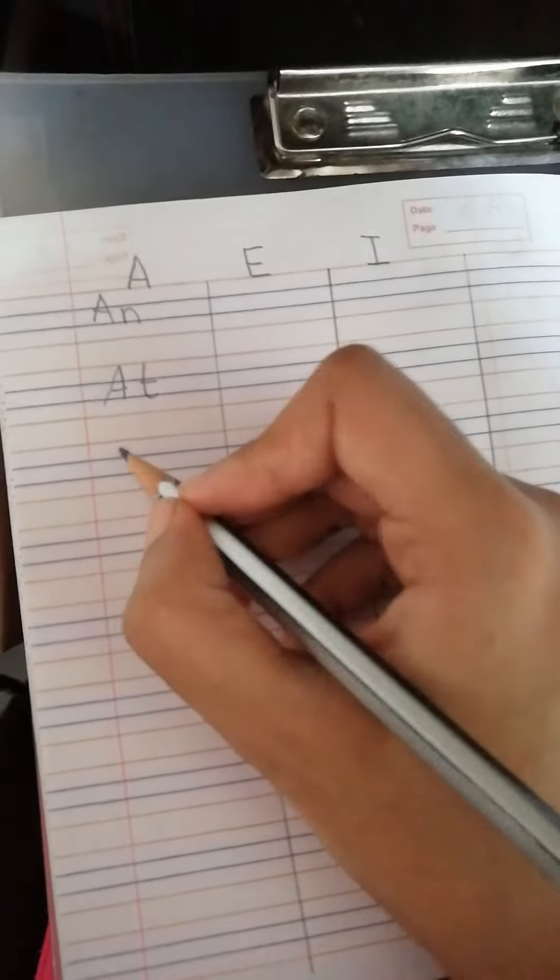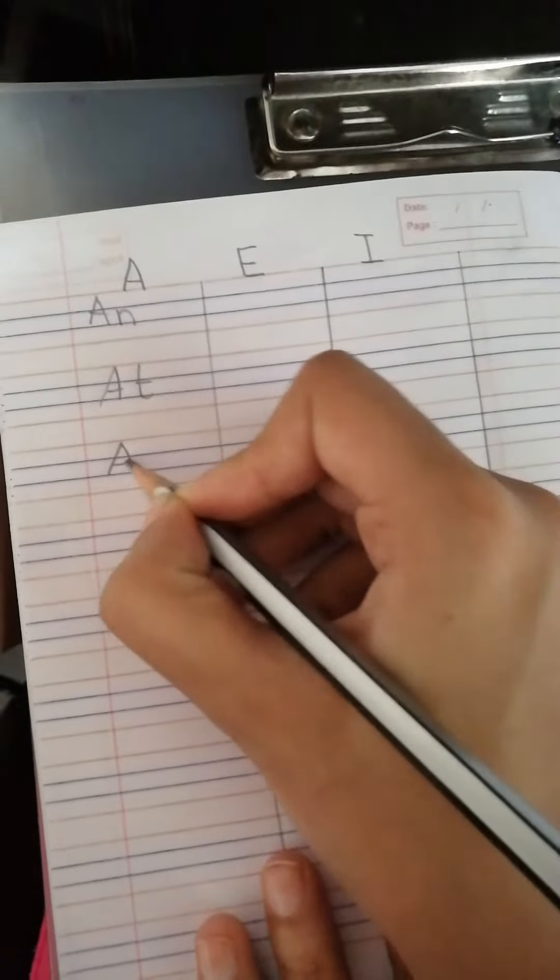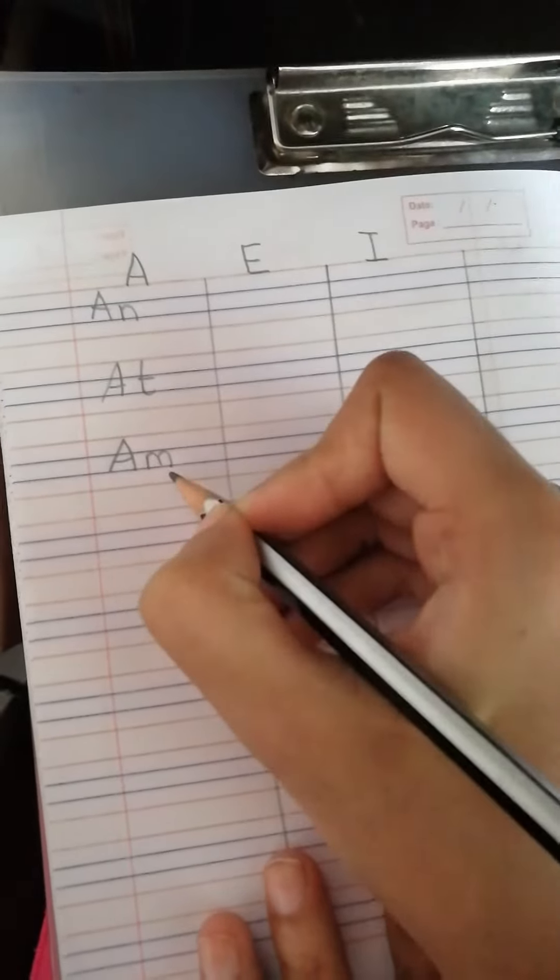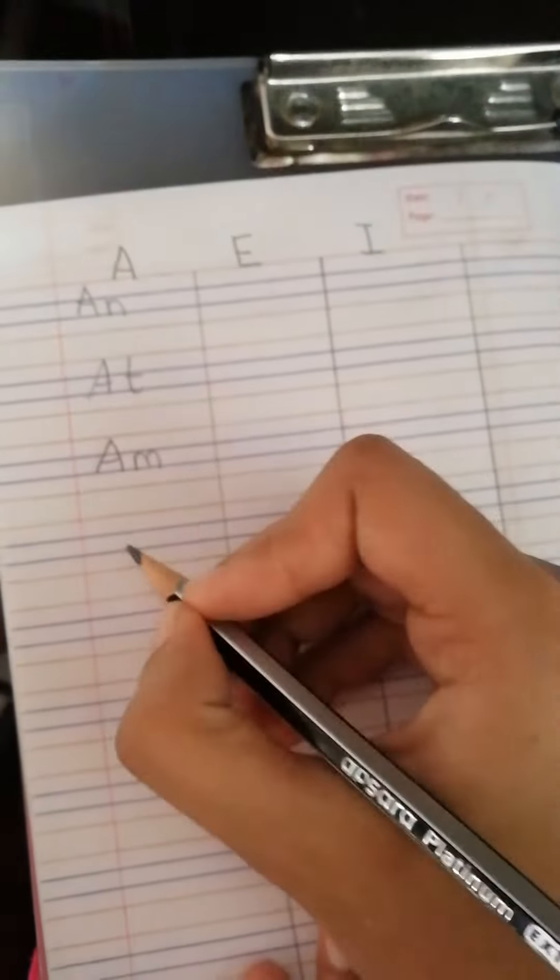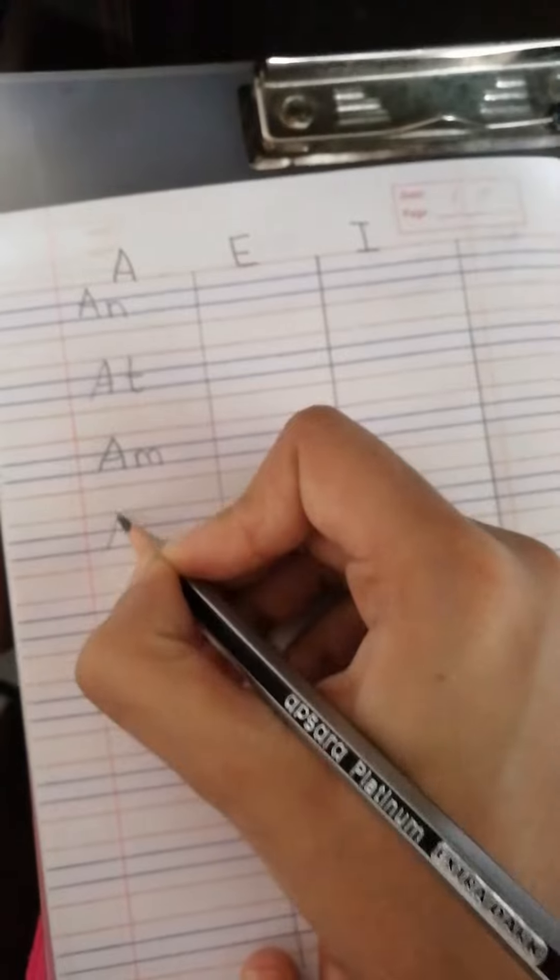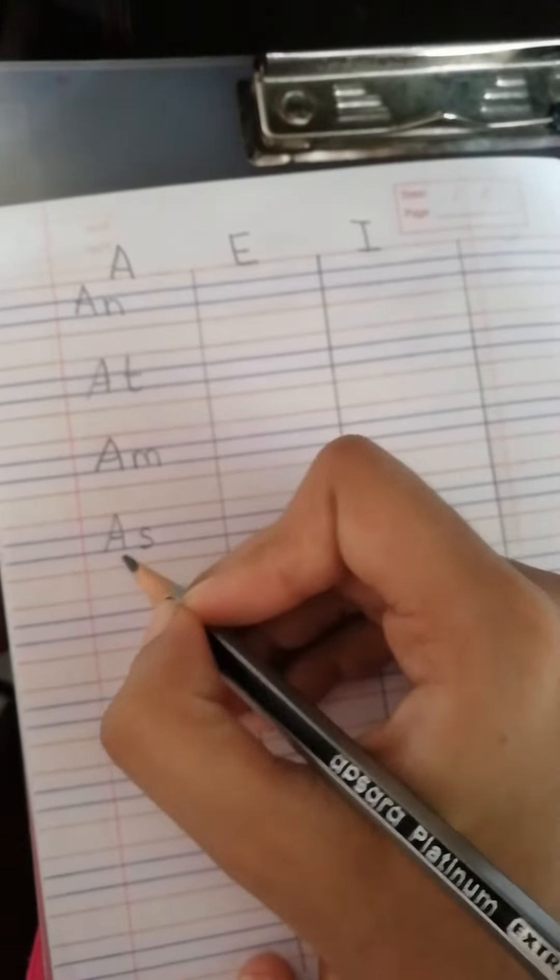One more word that starts with the letter A is a, m, m. And last word we have learnt is a, s, as.